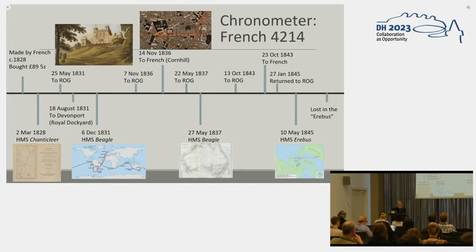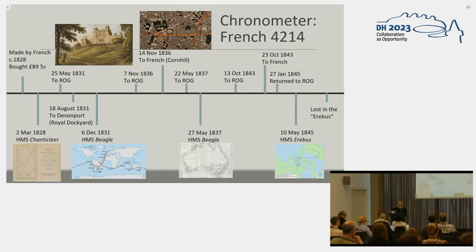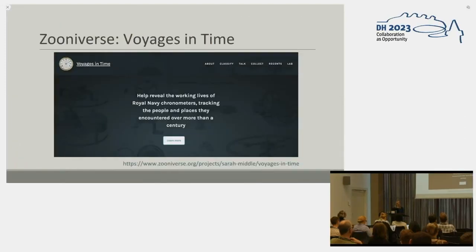Picking up from where we left off on the first case study, we saw the example of Chronometer French 4214, which joined the Shelton Clock on the Chanticleer expedition. Using its entries in the Admiralty chronometer ledgers and the Tools of Knowledge project database, we can use a timeline visualisation to represent the chronometer's movements on expeditions, including accompanying Charles Darwin on one of the Beagle voyages, while it returned regularly to its maker and the Royal Observatory before it was lost on the Erebus expedition. But there were lots of these chronometers in circulation during the 19th and 20th centuries, as well as a rich source of handwritten information about them. So how might we collect data about their itineraries and represent it at scale?